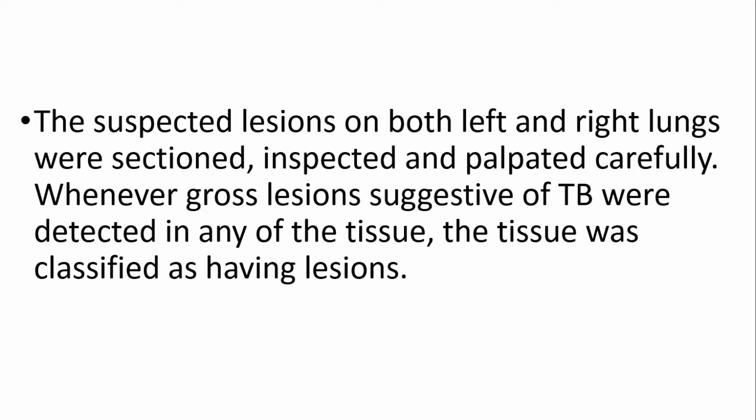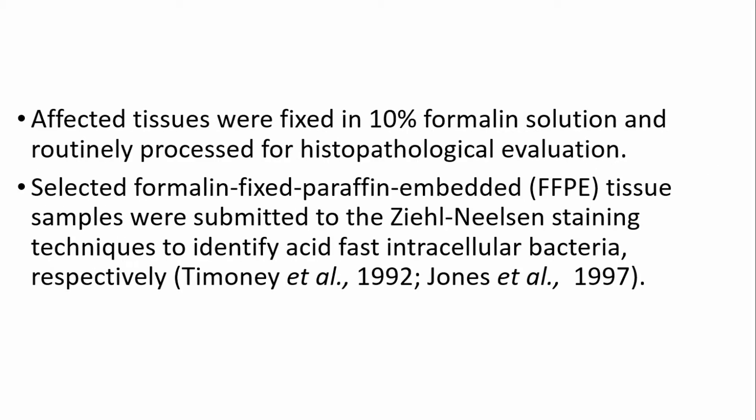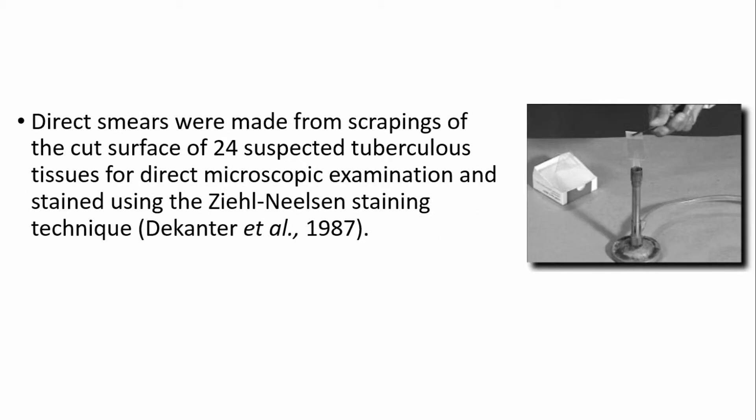Whenever gross lesions suggestive of TB were detected in any tissue, that tissue was classified as having a lesion. Affected tissue was collected and fixed in 10% buffered formalin solution and routinely processed for histopathological evaluation. After histopathological processing, sections were prepared. Direct smears were also made from scrapings of the cut surface of 24 suspected tuberculosis regions and stained with acid-fast stain or Ziehl-Neelsen stain.